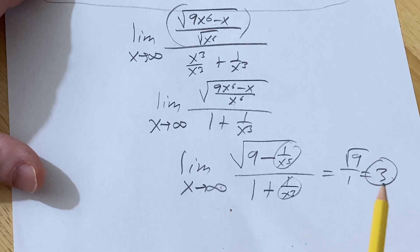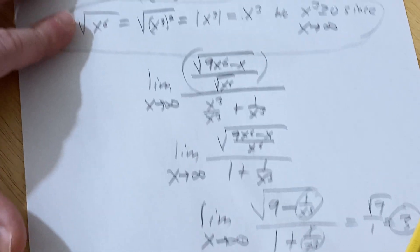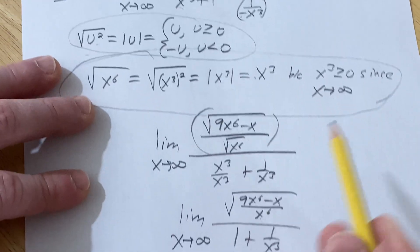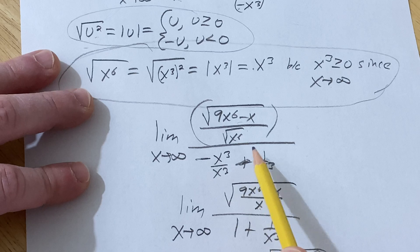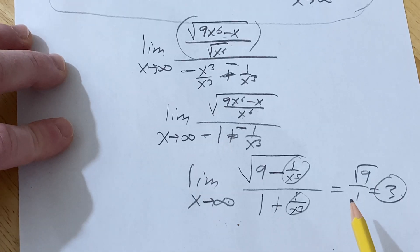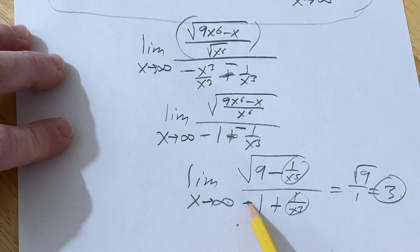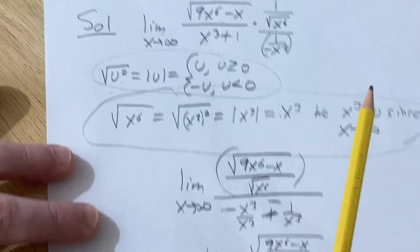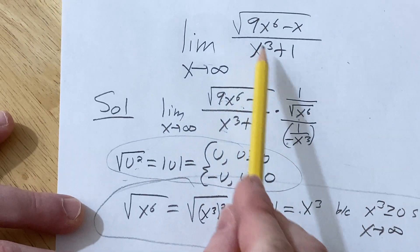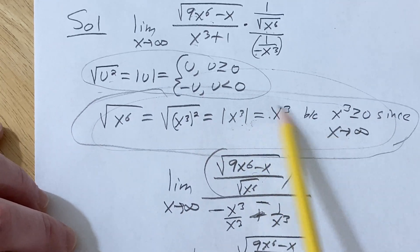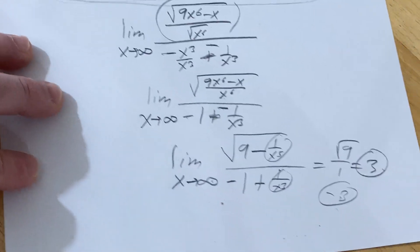If instead it had been negative infinity, what would happen is you would get a negative here — a negative here and a negative here. This would be a negative, and this would be a negative, so you would just end up with negative 3 instead. It's an interesting problem because people would have a hard time with this if it was negative infinity. Just something that comes up a lot — really important to know the definition of absolute value. Good luck.